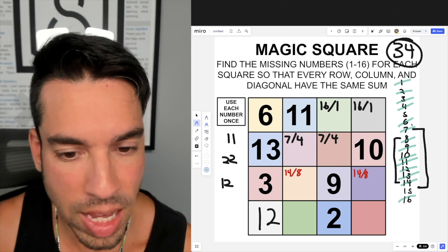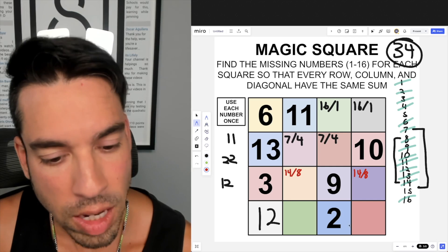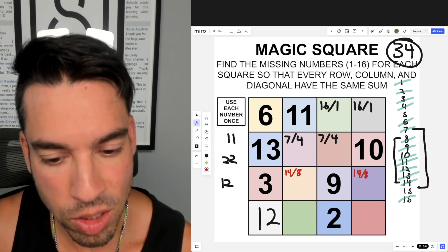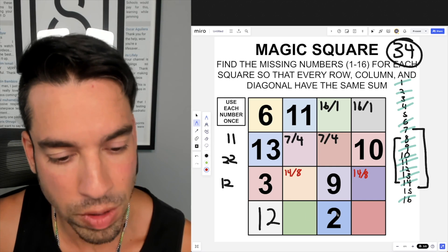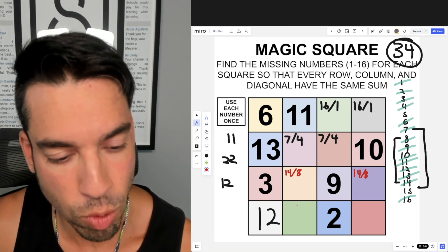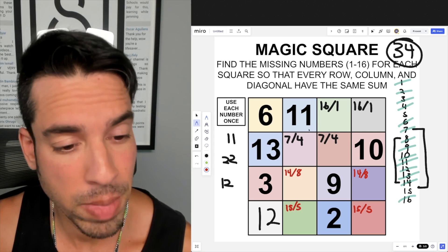Of course that lets me cross those off, and then last but not least we got 15 and 5. It makes total sense that they got to go here and here, because 15 and 5 add up to 20, 12 and 2 add up to 14, and 20 plus 14 is again 34.